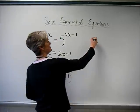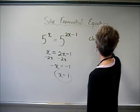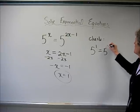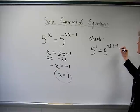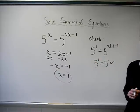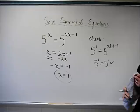Should we just check? Sure. So 5 to the first, I'm pretty sure that's going to be 5 there. Very nice. Equals 5 to the 2 times 1 minus 1, also 5 to the 1. Beautiful. That works. So let's get a little more complicated, shall we?